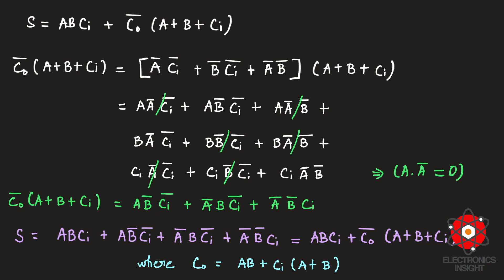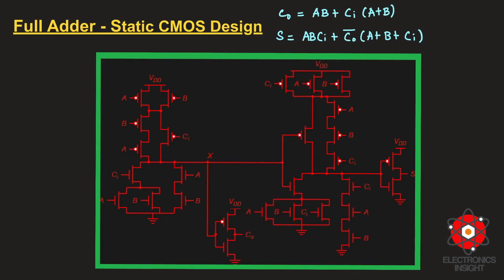The rule for implementing any expression in static CMOS design is straightforward: we always take the given expression in complement form. The complement expression C₀_bar = (a·b + ci·(a+b))_bar is implemented in the PDN/PUN. The output at node X is C₀_bar, and the output at the next node is S_bar. We then use CMOS inverters to recover the final outputs.